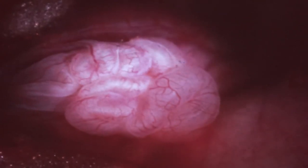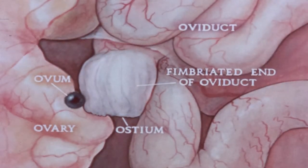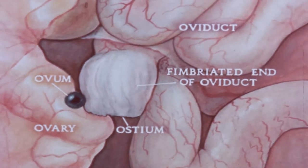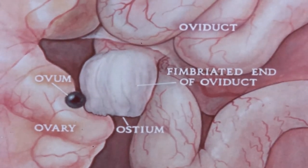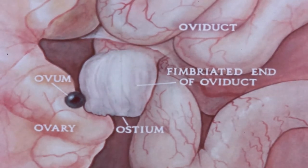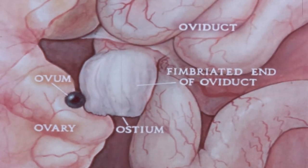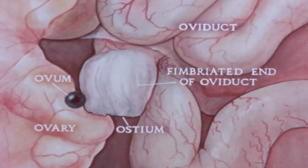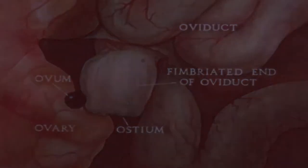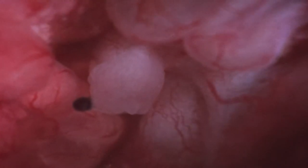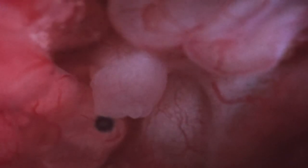We will now observe the method whereby the ovulated eggs are transported into the oviduct. If the periovarial sac surrounding the ovary is opened, we may observe the fimbriated end of the oviduct extending into the periovarial space — on the left is the ovary. The coils of the oviduct lie outside of the periovarial sac membrane. The ovum, with its accompanying granulosa cells, has been supravitally stained with methylene blue. We will observe the egg being moved by ciliary activity toward the ostium, where a combination of ciliary and muscular activity carries it into the oviduct.